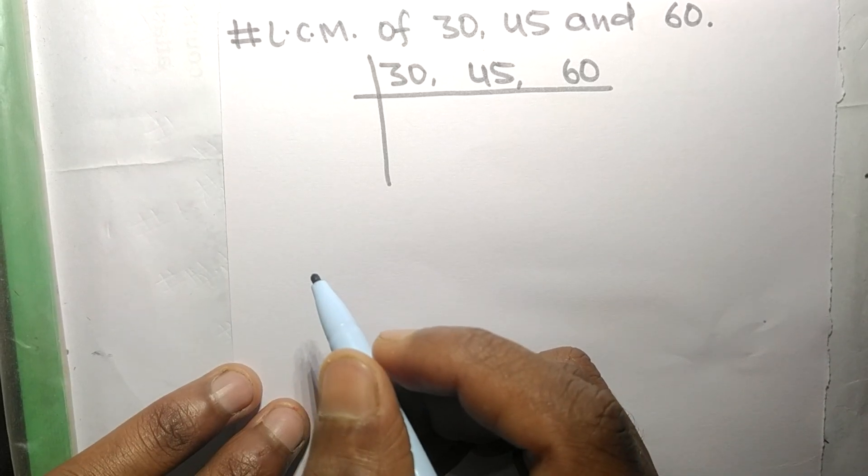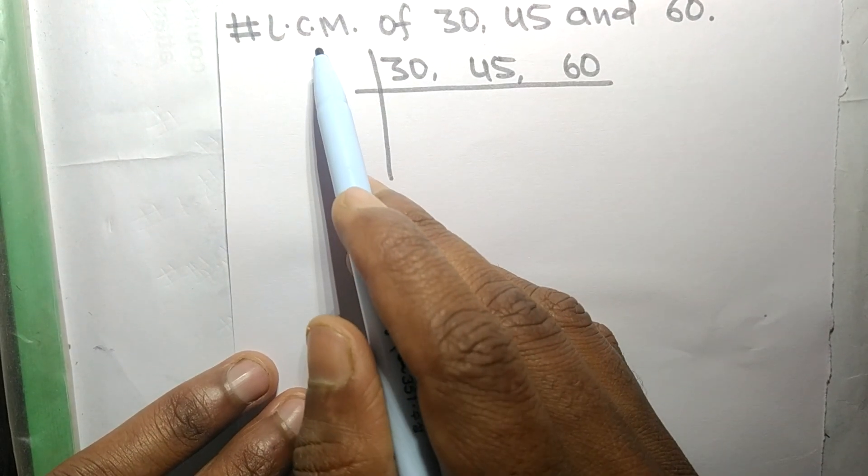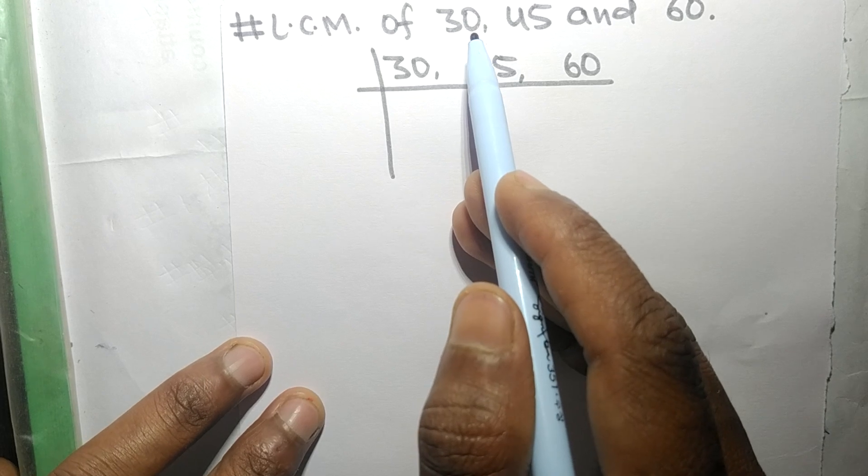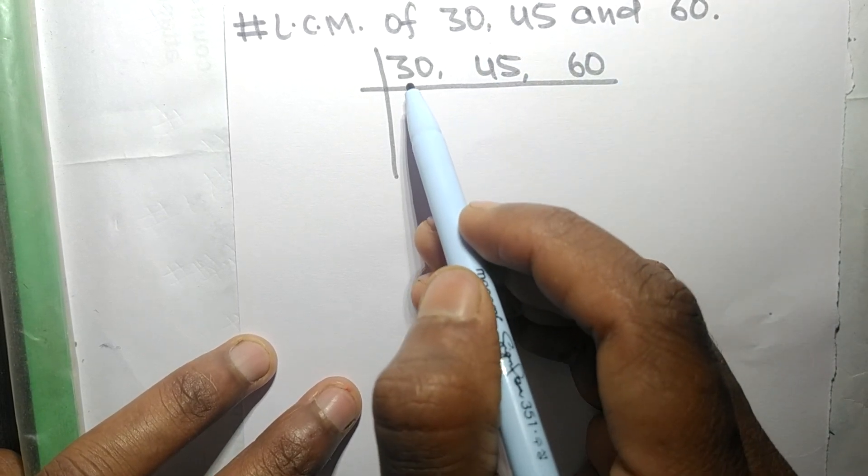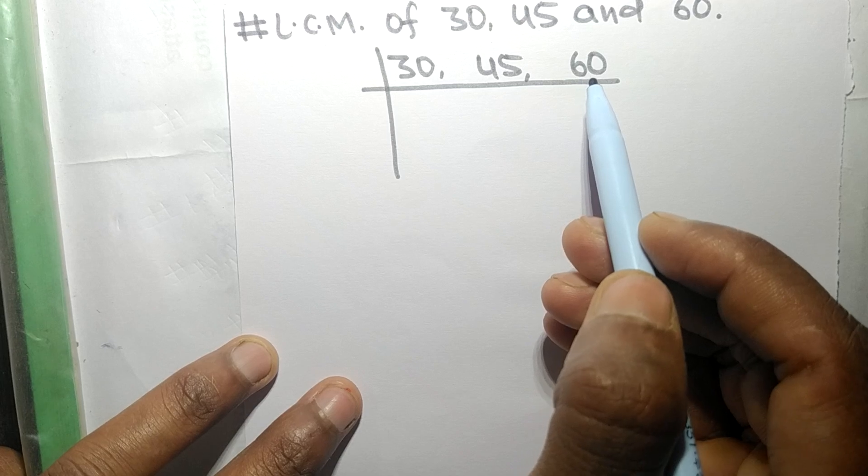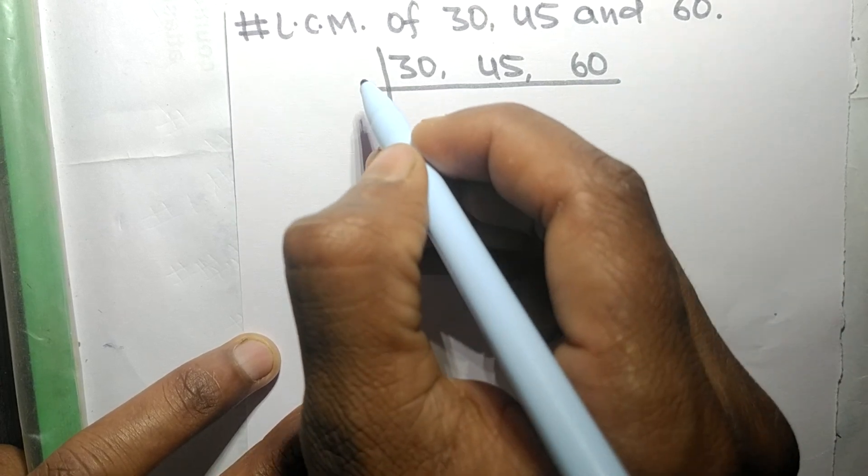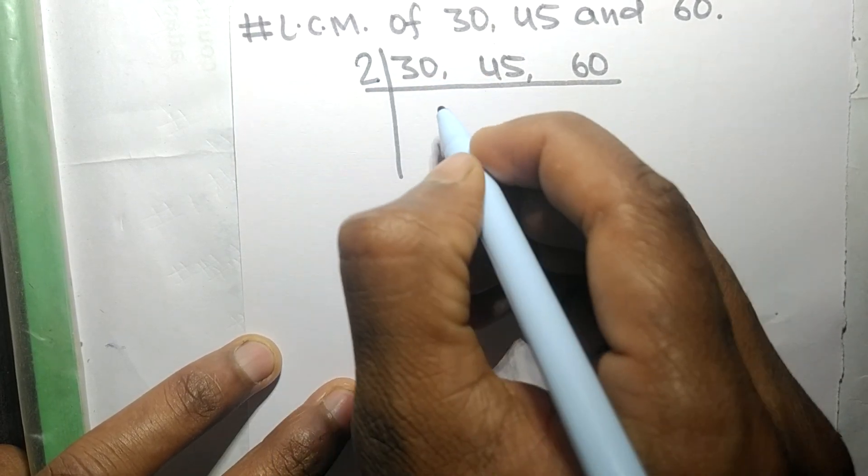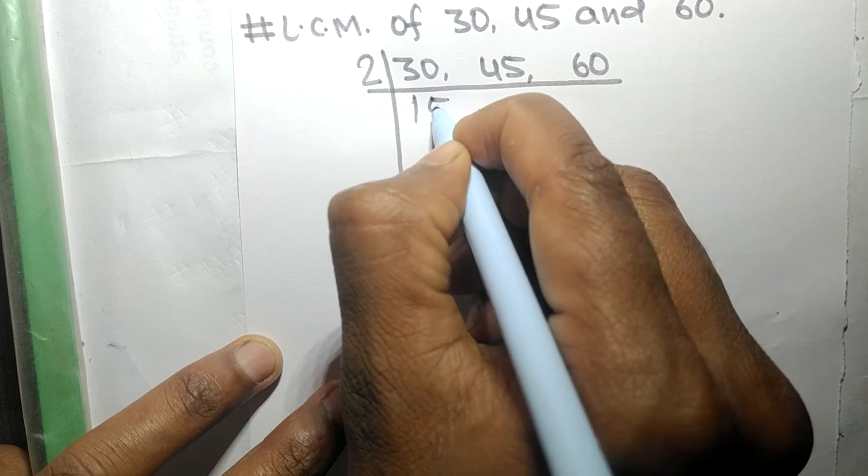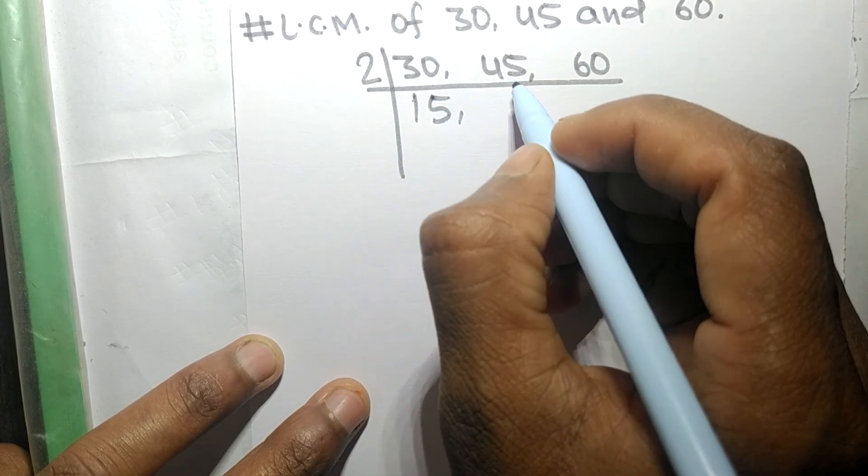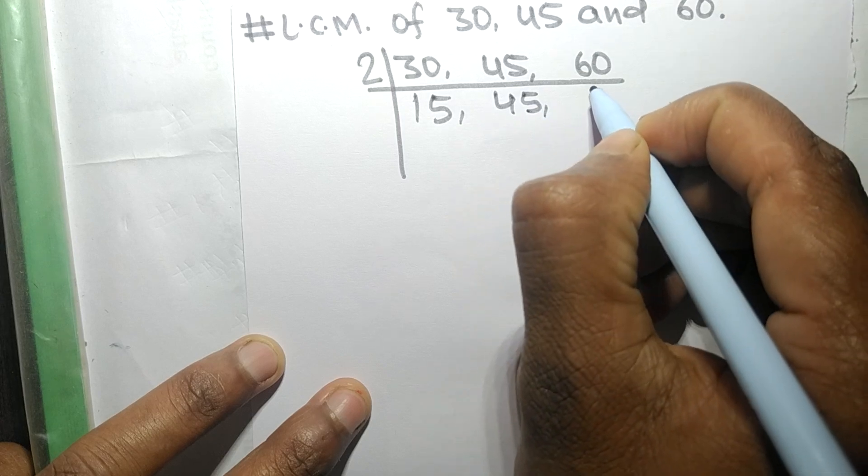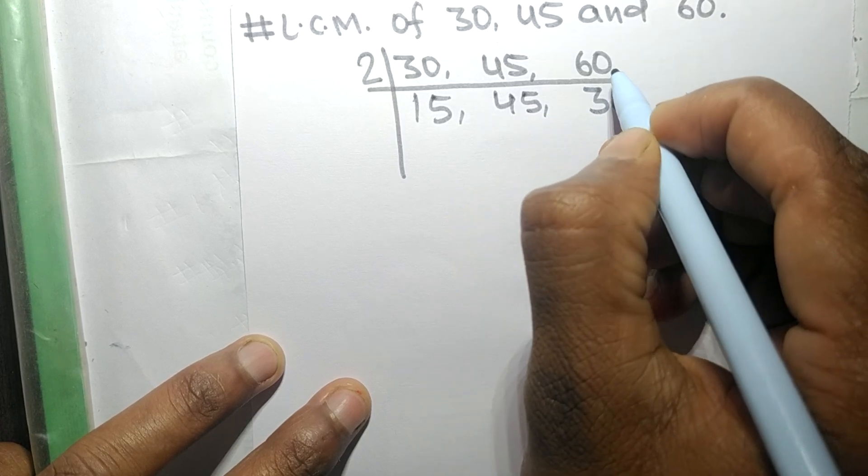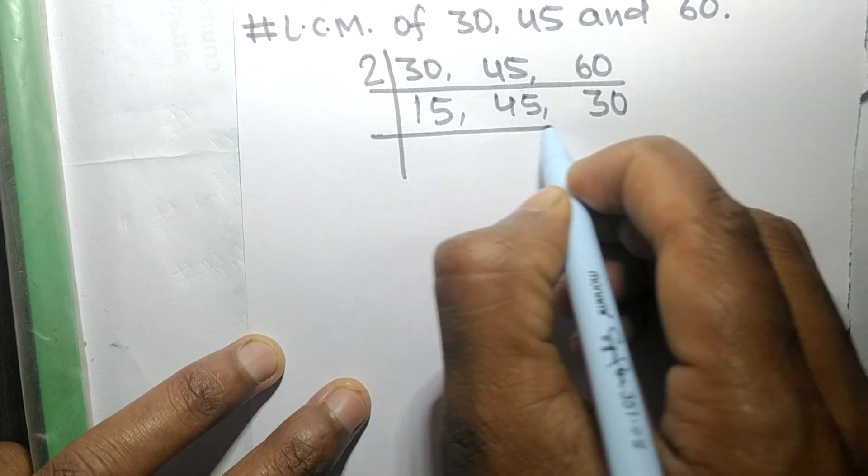So today in this video we shall find LCM of 30, 45, and 60. So 30 and 60 are exactly divisible by 2. So 2 times 15 equals 30, 45 not divisible so it is same, 2 times 30 equals 60.